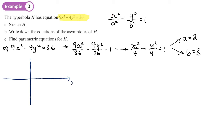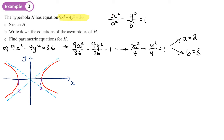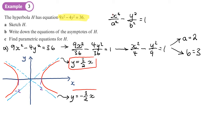Here is the sketch with x and y axes. The hyperbola crosses the x-axis at positive 2 and negative 2. The asymptote sloping upward is y equals three over two times x, and the one sloping downward is y equals negative three over two times x. It is important to include the asymptotes and their equations as part of the sketch.